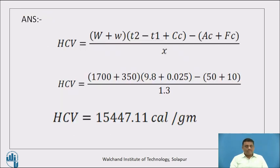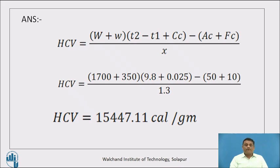The standard formula for HCV in the Bomb calorimeter experiment is: HCV = [(W + w) × (T₂ − T₁ + Cc) − AC + FC] ÷ X. Substituting: W = 1700, w = 350, rise in temperature = 9.8 + cooling correction 0.025, acid value correction = 50 cal, fuse wire correction = 10 cal, X = 1.3 g. The calculated answer for HCV is 15,447.11 cal/g.